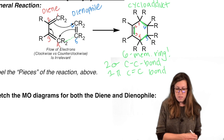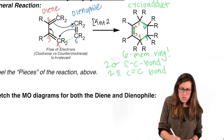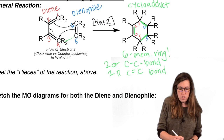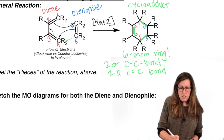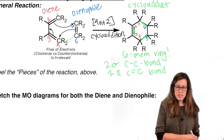This is called the Diels-Alder reaction, but the more technical term is a 4N+2 cycloaddition. The 4N comes from the fact that we have four pi electrons from the diene, plus two pi electrons from the dienophile, giving 4N+2. Notice we lost pi bonds, so it's an addition reaction, and we did it in a cyclic fashion — hence the term cycloaddition.